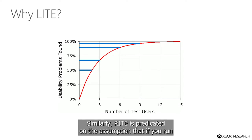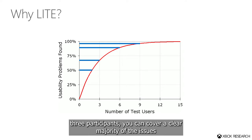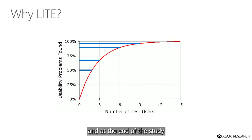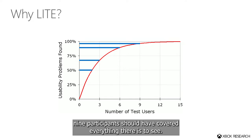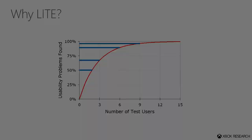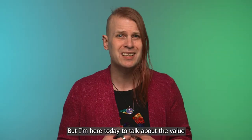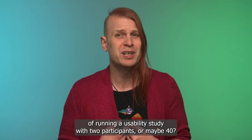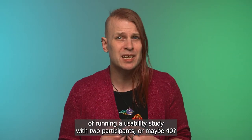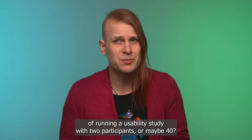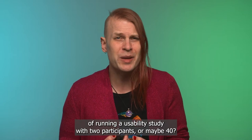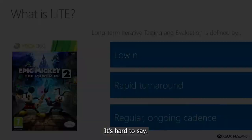Similarly, RITE is predicated on the assumption that if you run three participants, you can cover a clear majority of the issues, and at the end of the study, nine participants should have covered everything there is to see. But I'm here today to talk about the value of running a usability study with two participants — or maybe 40. It's hard to say.